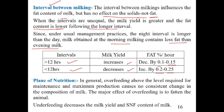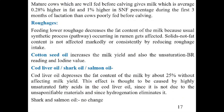Plane of nutrition is a very important factor. Overfeeding above the level required for maintenance and maximum production causes no consistent change in the composition of milk; the major effect of overfeeding is simply to fatten the animal. Underfeeding decreases both the milk yield and the SNF content of milk.